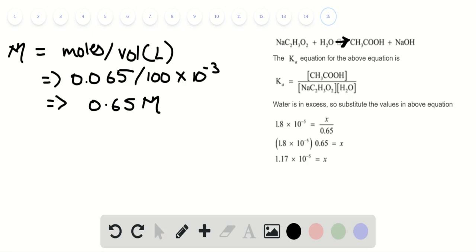From this we have the reaction representation of the solute. Now we need to determine the value of x by substituting the values into the Ka equation as represented. The value of x turns out to be 1.17 multiplied by 10 raised to power minus 5.